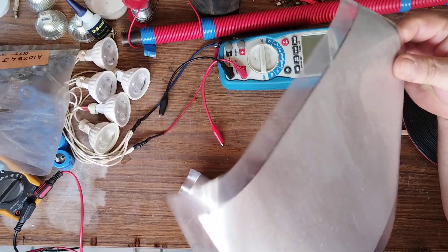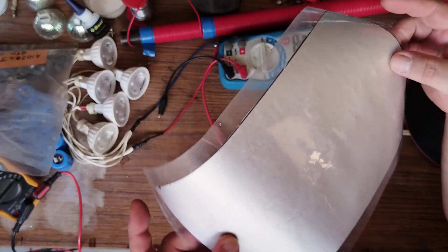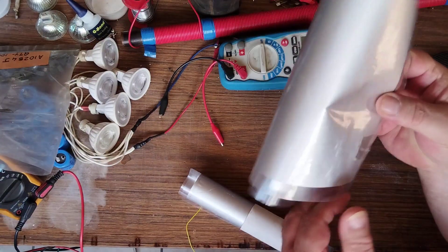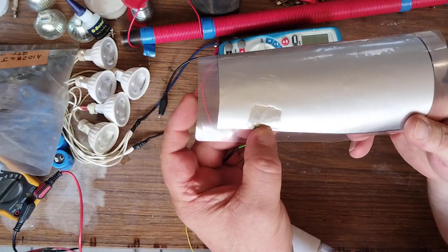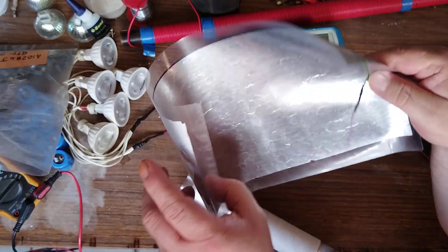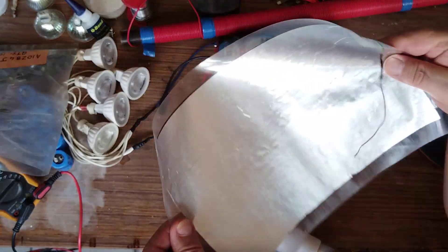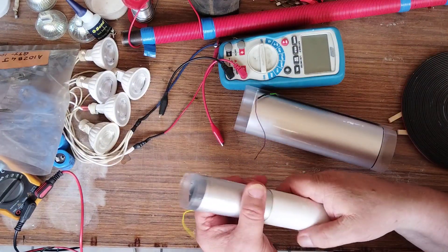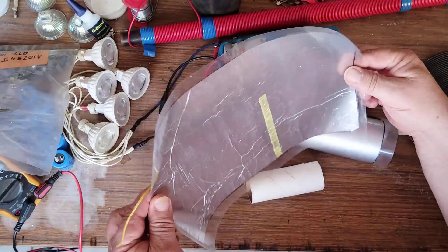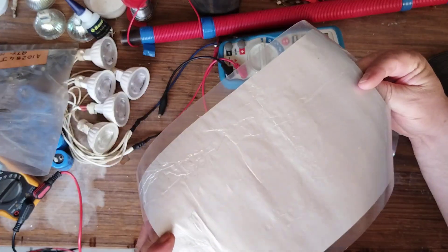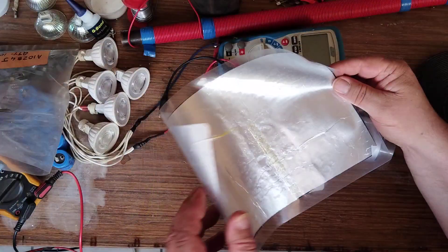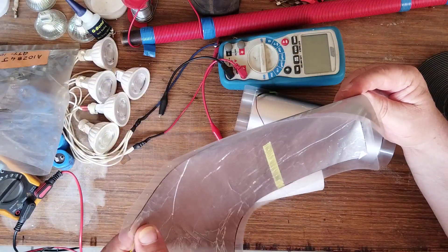Just normal aluminum foil that I stuck a wire to and then put through a laminating machine. Two sheets of aluminum foil inside a laminating machine.